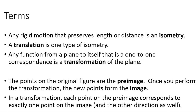Any function from a plane to itself that's a one-to-one correspondence is called a transformation of that plane. So if you take a rectangle on the coordinate plane and move it, reflect it, or rotate it, every point that was in the original now has a corresponding point on the new one. We call the original figure the preimage, and once you perform that operation, the new one is called the image.